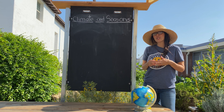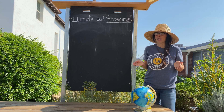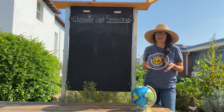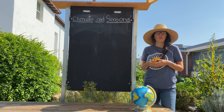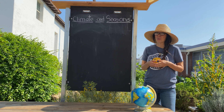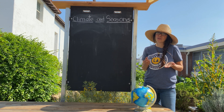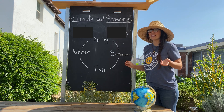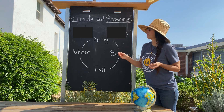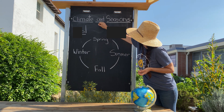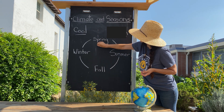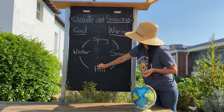Remember how we talked about our Mediterranean climate? We have mild winters here and warm summers. We don't experience super cold winters. And our summers, although sometimes hot, are pretty mild. Because of our climate, we have two growing seasons: a cool growing season and a warm growing season.